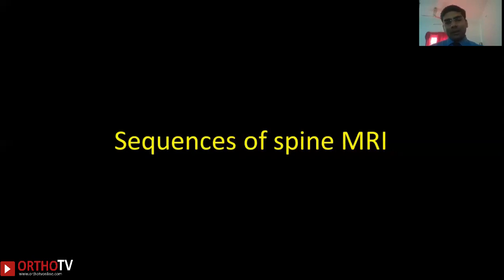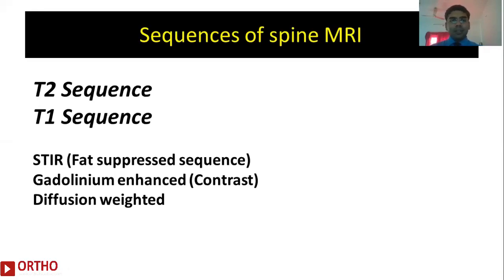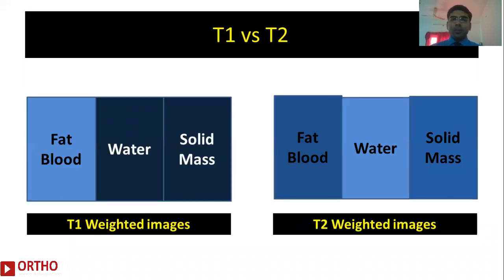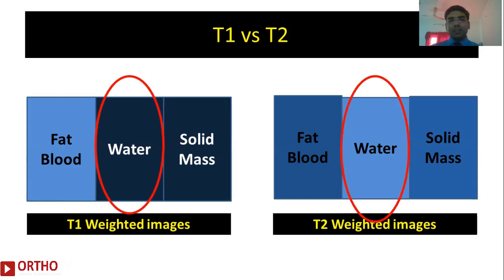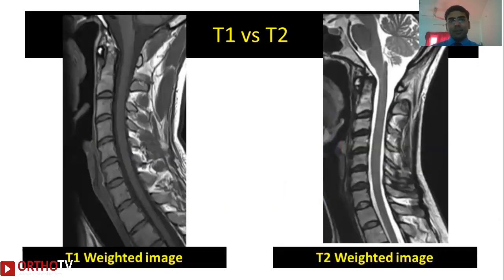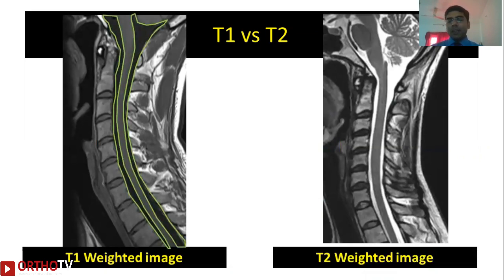There are two important sequences of spine MRI: the T2-weighted sequence and the T1-weighted sequence. In special circumstances we also use a fat-suppressed STIR sequence, post-contrast gadolinium-enhanced sequence, or a diffusion-weighted sequence. The striking difference between the two main sequences is how water-containing tissues are visualized. On a T1-weighted image, higher water content gives a hypointense or dull signal, whereas on a T2-weighted image, higher water content gives a brighter signal. You can see on the left a T1-weighted image where the CSF is dull in color, and on the right a T2-weighted image where the CSF is white.